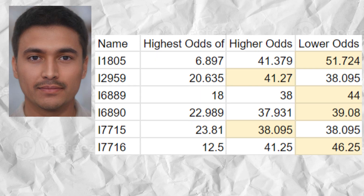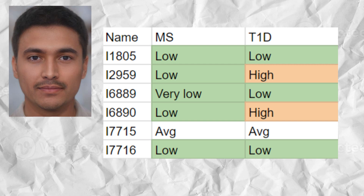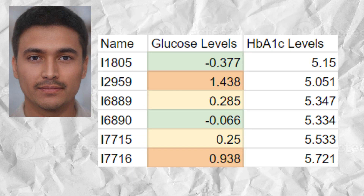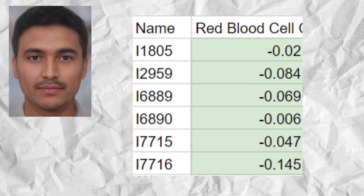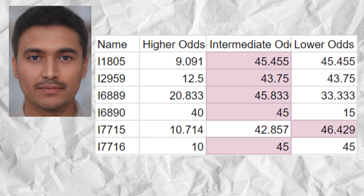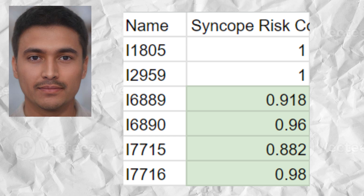The samples had a low predisposition to autoimmune disease based on HLA genotypes, and none had HLA-DRB1 risk variants for multiple sclerosis, although two samples scored high odds for type 1 diabetes. However, the samples did have a very strong predisposition to metabolic type 2 diabetes, and a predisposition to elevated glucose levels. Interestingly, every sample was predicted to have low red blood cell count. None had hemochromatosis. Five samples had intermediate odds and one had lower odds of obesity, and every sample had lower odds of syncope.